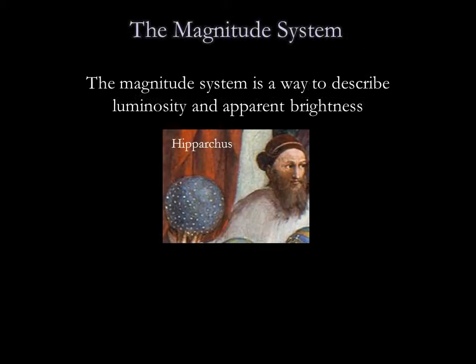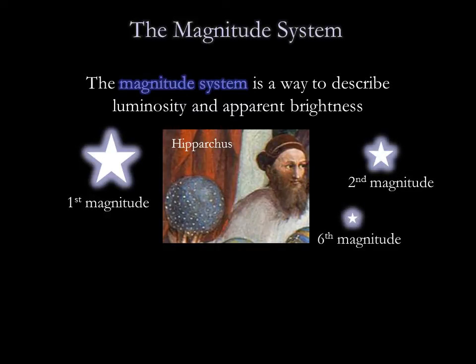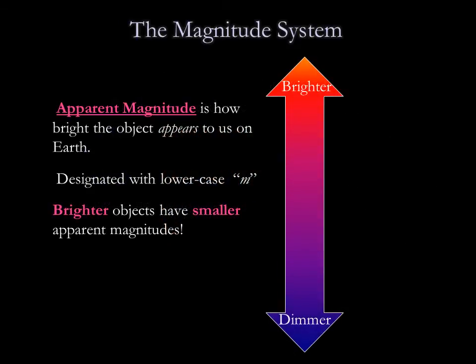To describe apparent brightness and luminosity, we use what is called the magnitude system. It was developed by the Greek astronomer Hipparchus over 2,000 years ago. The magnitude system originally classified stars based on how bright they look to human eyes. The brightest stars were called first magnitude, and the next brightest stars second magnitude, and so on. The faintest visible stars were magnitude 6. These descriptions are called apparent magnitudes because they compare how bright different stars appear in the sky. We denote apparent magnitudes with a lowercase m.